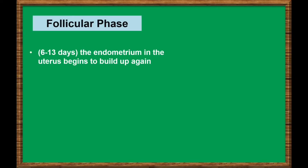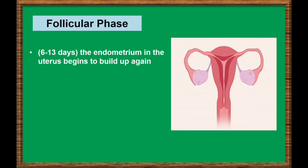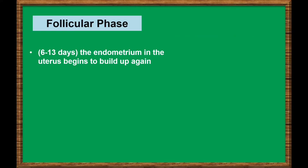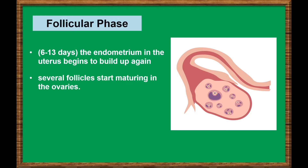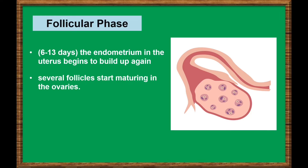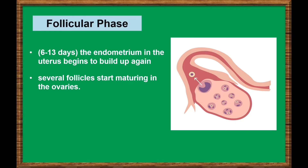The next phase of the cycle is called the Follicular Phase. After menstruation, the endometrium in the uterus begins to build up again. At the same time, several follicles start maturing in the ovaries. Only one of these maturing follicles will complete maturation; the rest will eventually deteriorate and disappear.